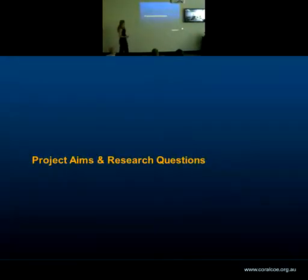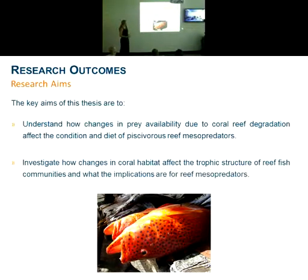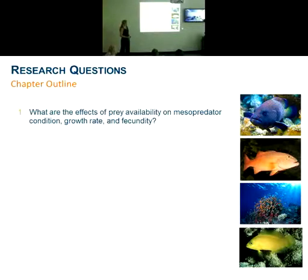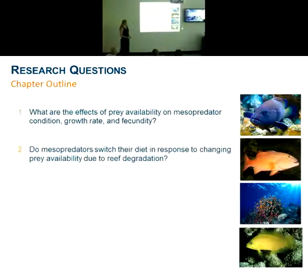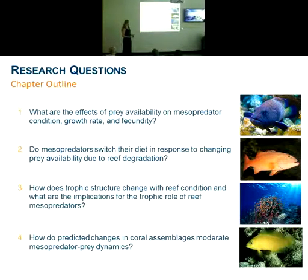This brings me to my aims and research questions. I aim to look at two key aims. The first is to understand how changes in prey availability due to coral reef degradation affect the condition and diet of piscivorous reef mesopredators. The second aim is to investigate how changes in the coral habitat affect the trophic structure of reef fish communities and what the implications are for reef mesopredators. To address these, I've outlined four research questions, each relating to one chapter: what are the effects of prey availability on mesopredator condition, growth rate, and fecundity? Do mesopredators switch their diet in response to changing prey availability due to reef degradation? How does trophic structure change with reef condition and what are the implications for the trophic role of mesopredators? And how do predicted changes in coral assemblages moderate predator-prey dynamics?